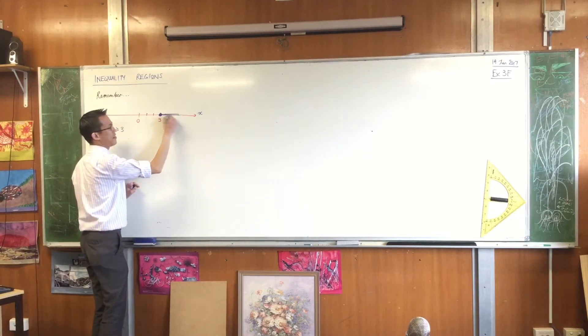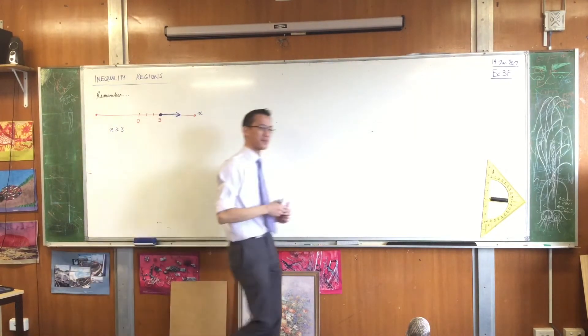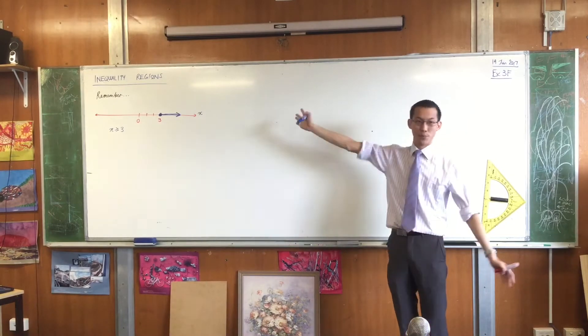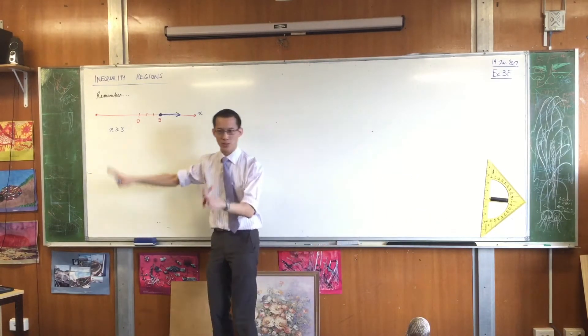So, this blue line with an arrow indicates any point on this number line in the blue area satisfies this inequality. So far, so good.